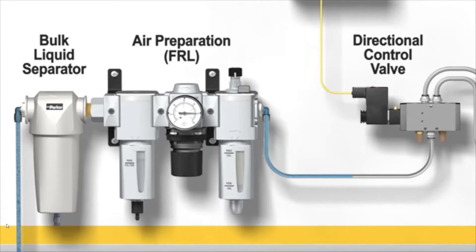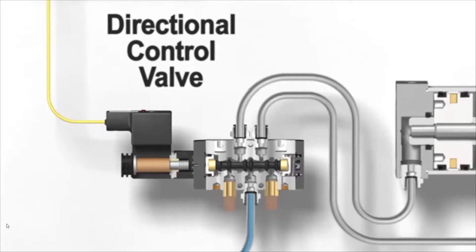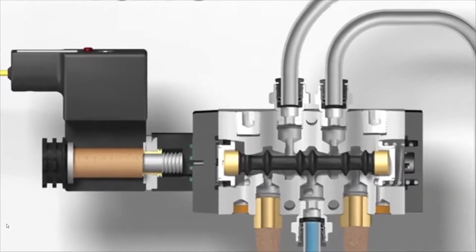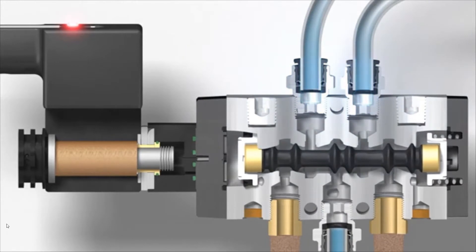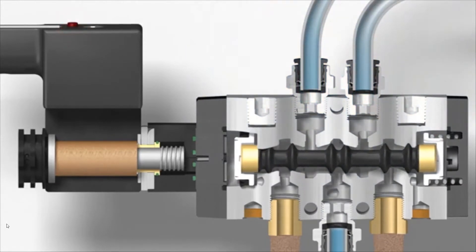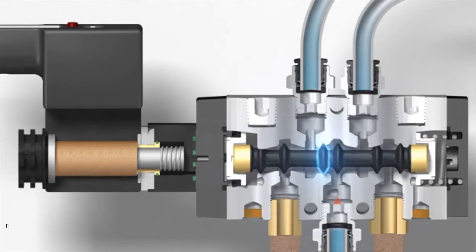A directional control valve is used to achieve this task. This directional control valve has a series of internal pathways that can connect the air coming into the inlet port with one of two avenues to leave the valve, called working ports. Depending on the position of the moving element, which is typically called a spool, the air will be blocked from traveling down one pathway and allowed to travel down the other.